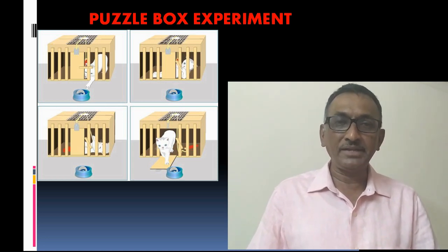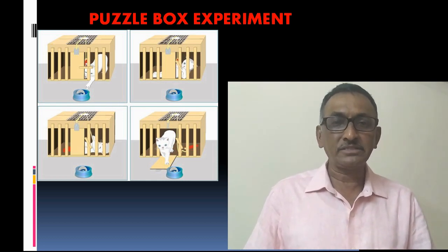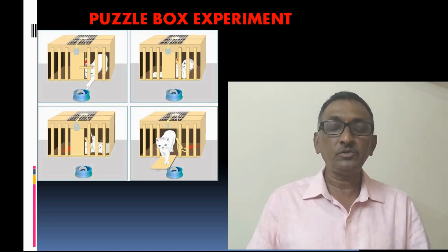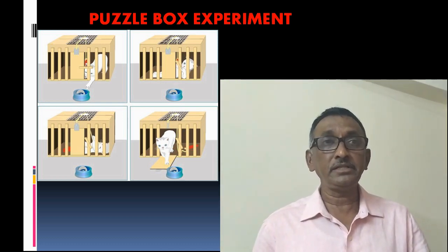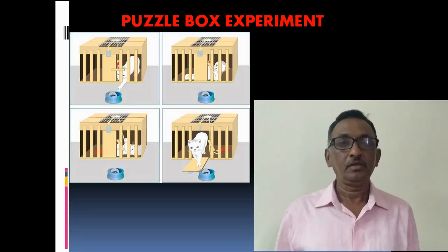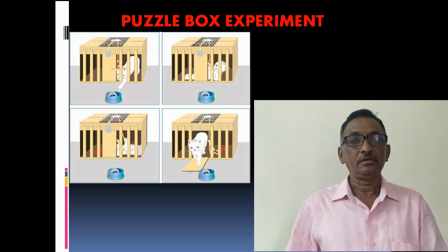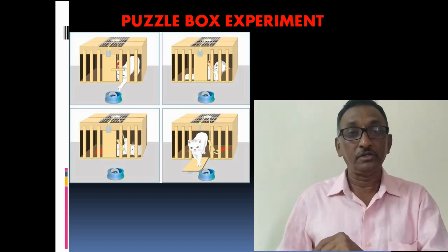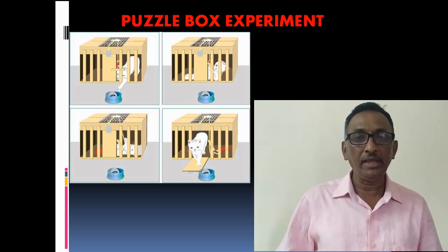Again, Thorndike placed the cat under similar conditions. On the subsequent trials, the cat took less time for reaching the goal. Ultimately, the cat learned how to open the door in a single trial. In other words, after repeating the process, the cat learned to make the correct response almost immediately. So, whenever the cat wanted food, it pressed the lever. He also observed that when pressing the lever was not followed by food, the rate of pressing the lever became diminished. This is the puzzle box experiment conducted by Thorndike.